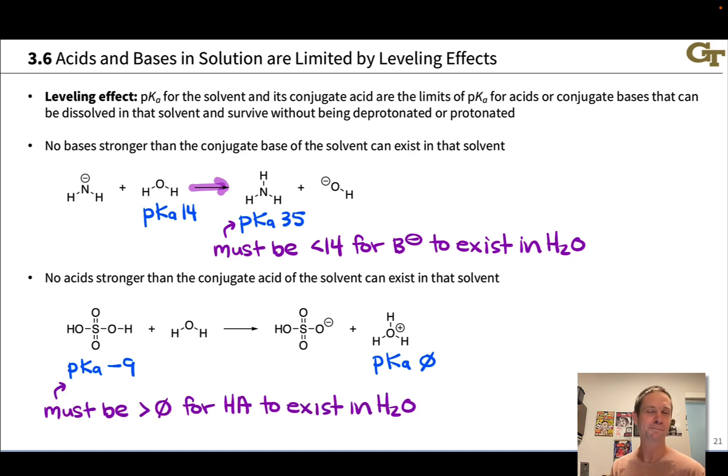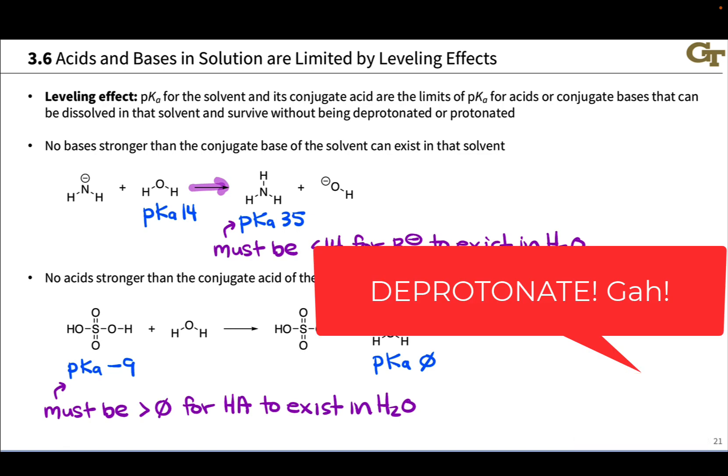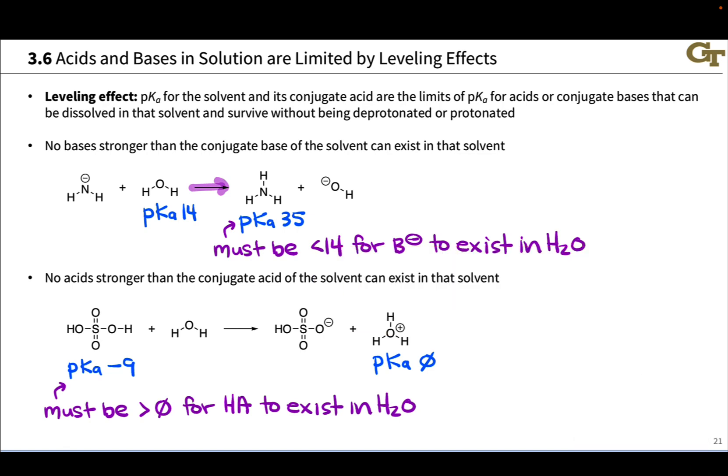In order for an acid to exist intact in water, its pKa must be greater than 0. If the pKa is less than 0, then water will rapidly and irreversibly protonate that acid to give H3O+, and the conjugate base of the acid. So got to make sure that that pKa is greater than 0 for HA to exist in H2O.